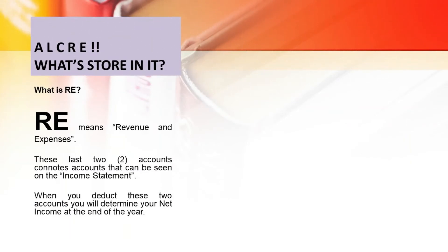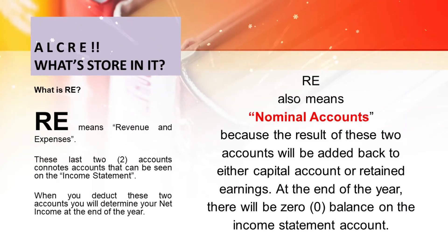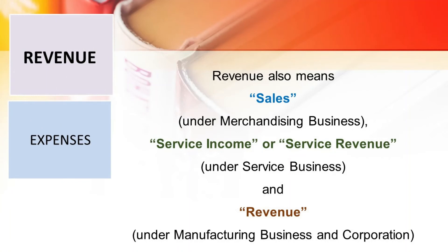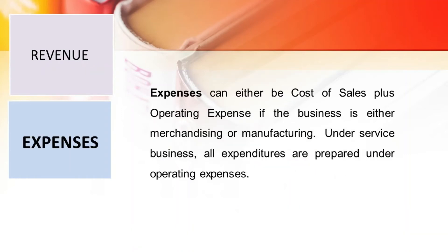RE means revenue and expenses. These last two accounts are accounts that can be seen on the income statement. When you deduct these two accounts, you will determine your net income at the end of the year. RE also means nominal accounts because the result of these two accounts will be added back to either the capital account or retained earnings at the end of the year, leaving a zero balance on the income statement. Revenue means sales under merchandising business, service income under service business, and revenue under manufacturing and corporations. Expenses can be cost of sales plus operating expenses for merchandising or manufacturing, while under service business all expenditures are recorded under operating expenses.